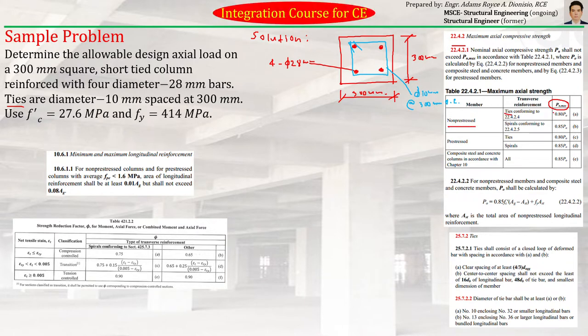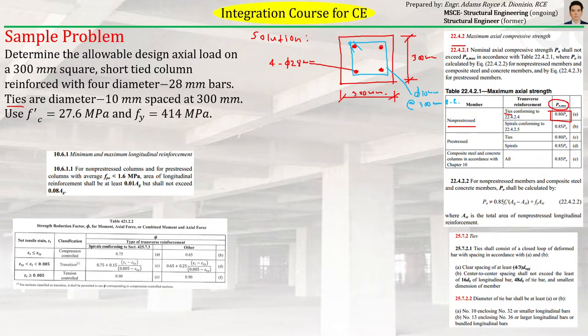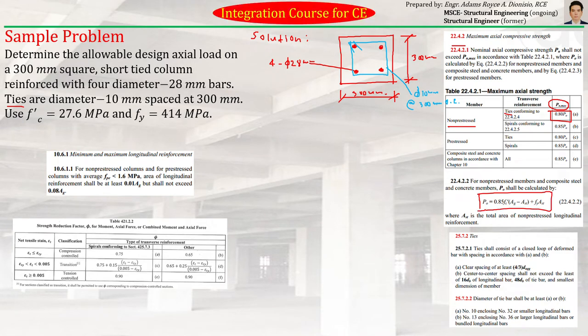So our formula will be 0.8 times PO, wherein our PO is this. That is what we want to find out, the PNMAX.